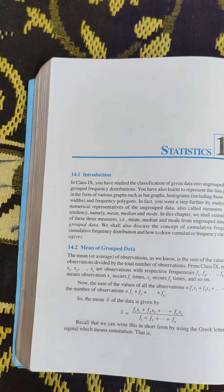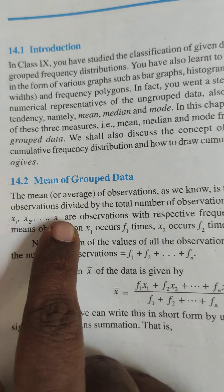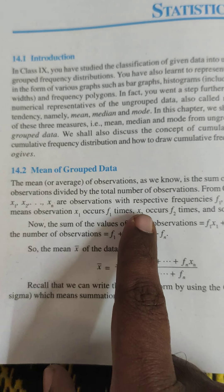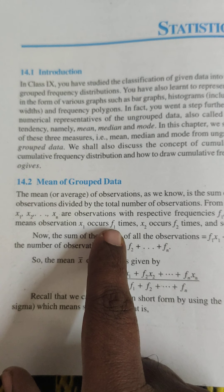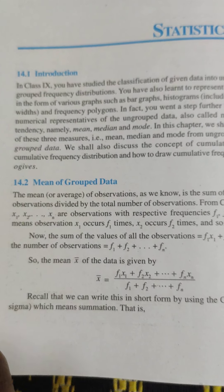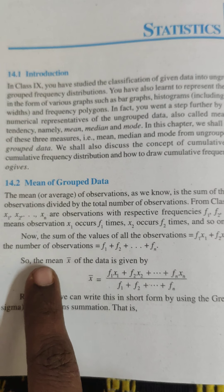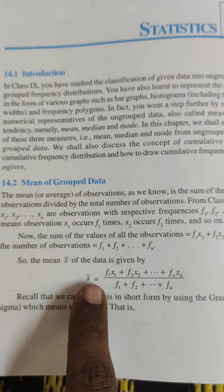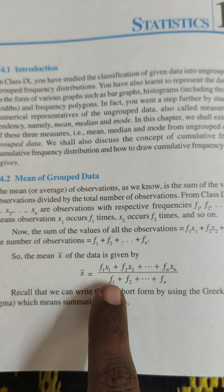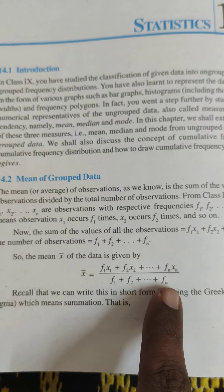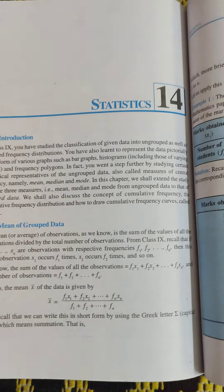Suppose there are n numbers x1, x2 up to xn, which repeat f1 times, f2 times and so on — that is, x1 occurs f1 times, x2 occurs f2 times and so on. Then the mean, denoted by x-bar, is given by: x-bar equals f1·x1 + f2·x2 + ... + fn·xn divided by f1 + f2 + ... + fn. This is the rule for finding the mean of grouped data.